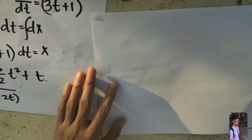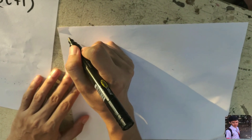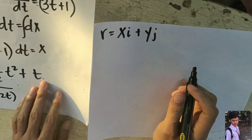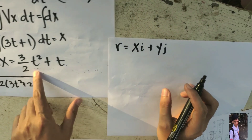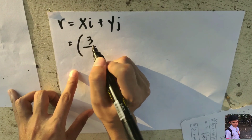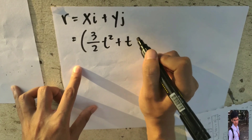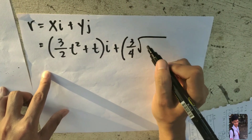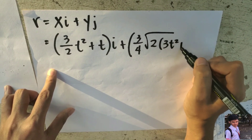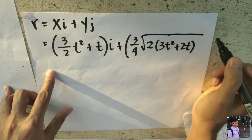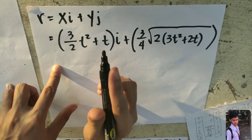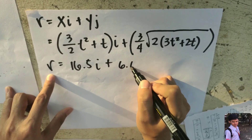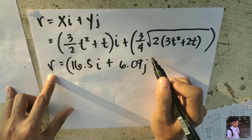After we get our value of x, we substitute this value into our equation of the line, where we get y equals 3/4 times the square root of 2 times (3t squared plus 2t). Using our general distance formula r equals x i plus y j and substituting the acquired values, we get the distance r equals 16.5 i plus 6.09 j meters.